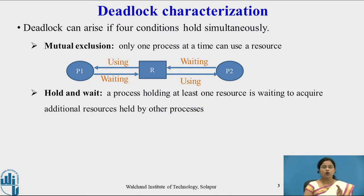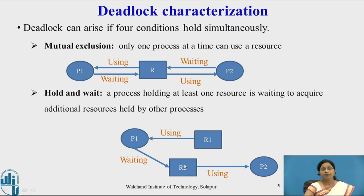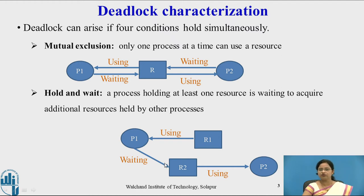Hold and wait means a process holding at least one resource is waiting to acquire additional resources held by other processes. For example, here P1 is already holding R1 and it is waiting for R2, which is already used by P2. So the process is holding one resource and waiting for another resource — that is hold and wait.